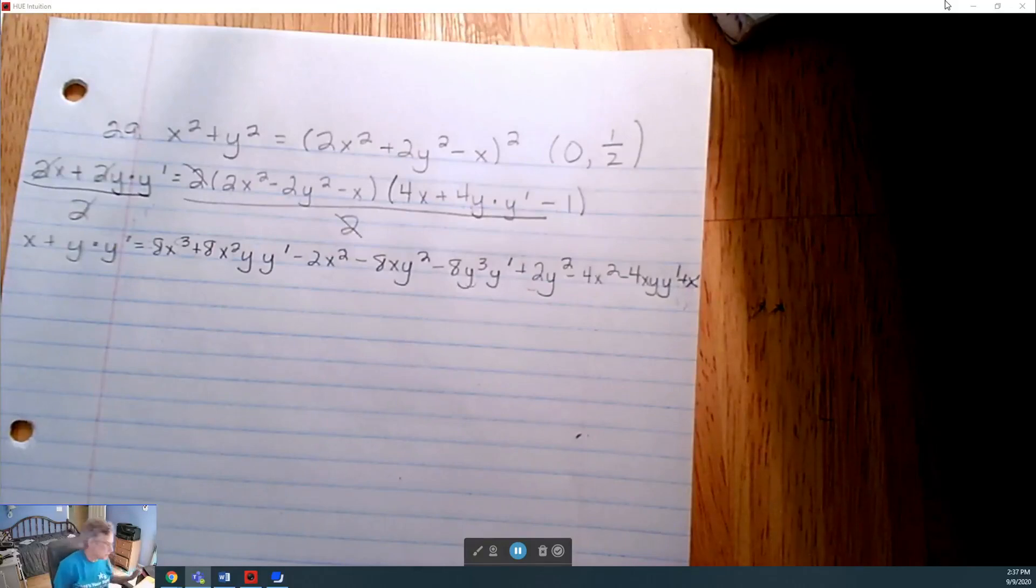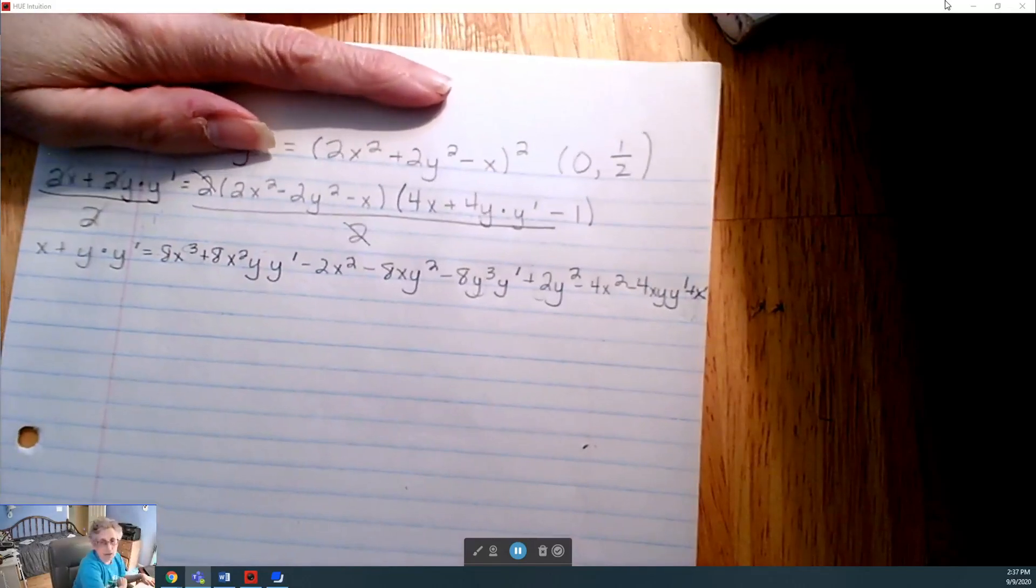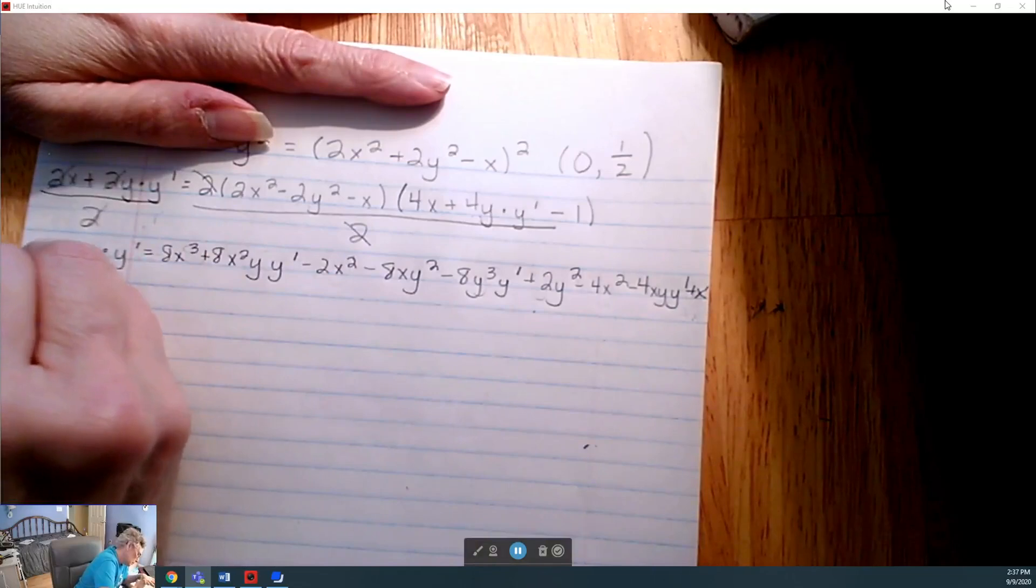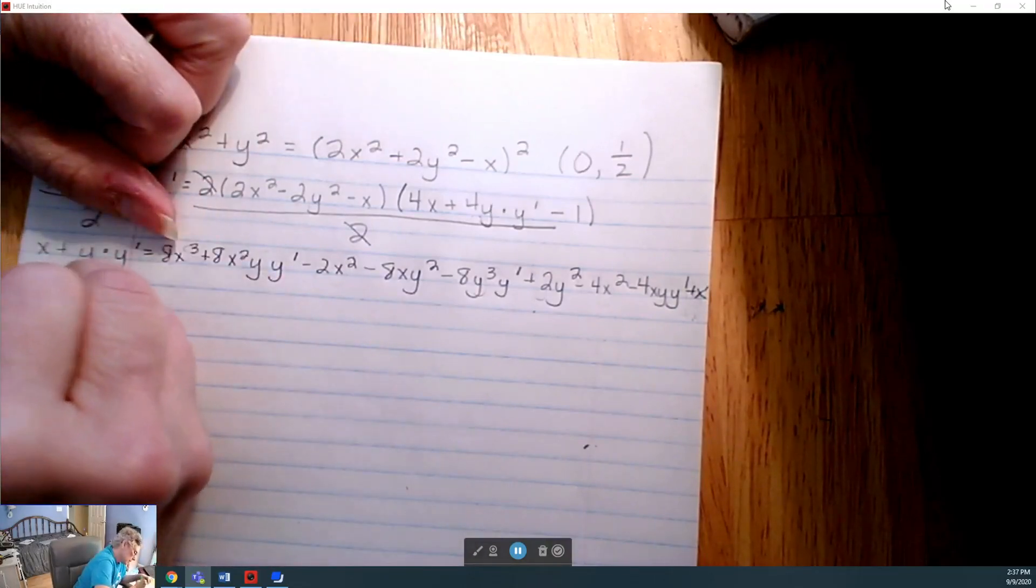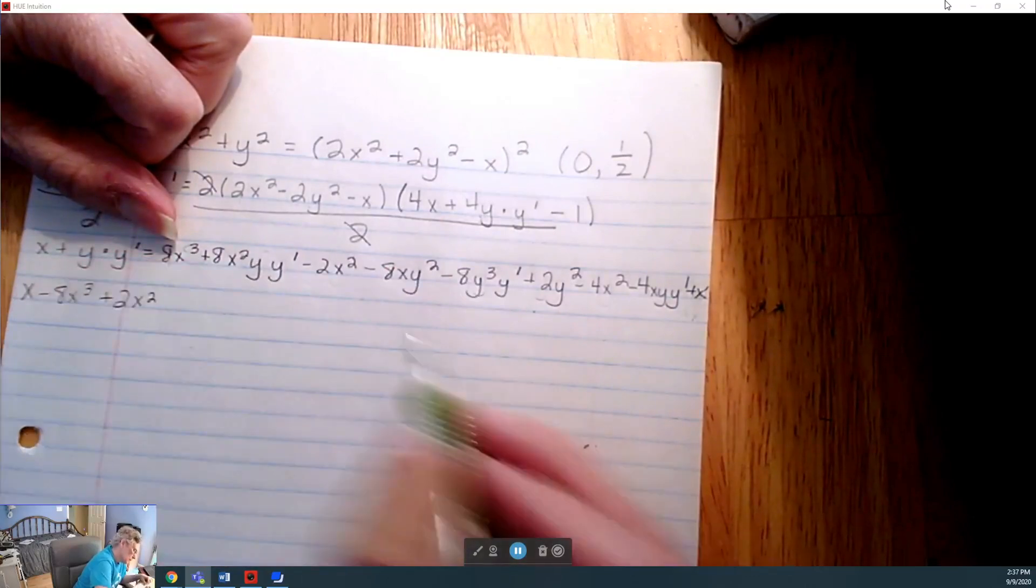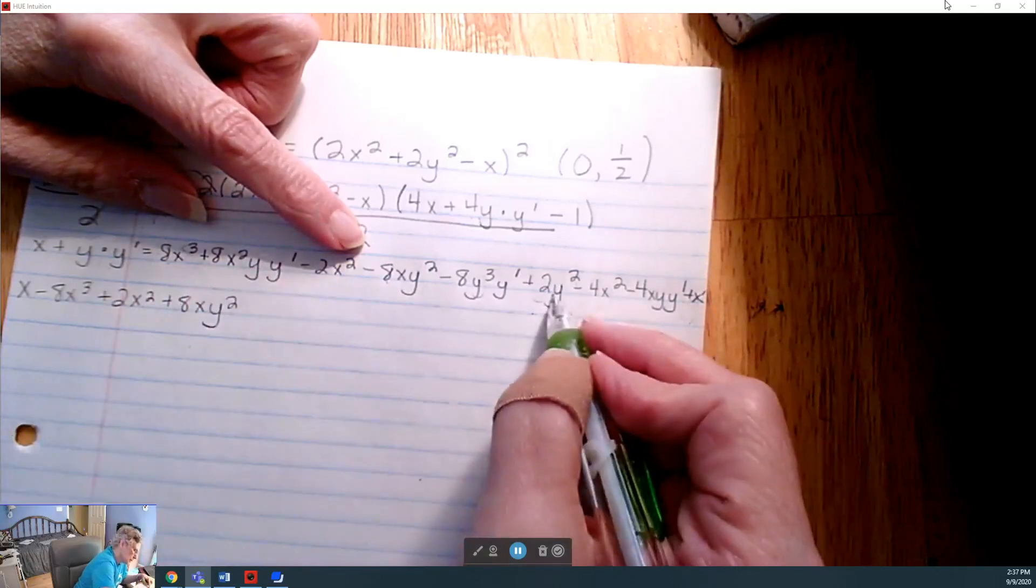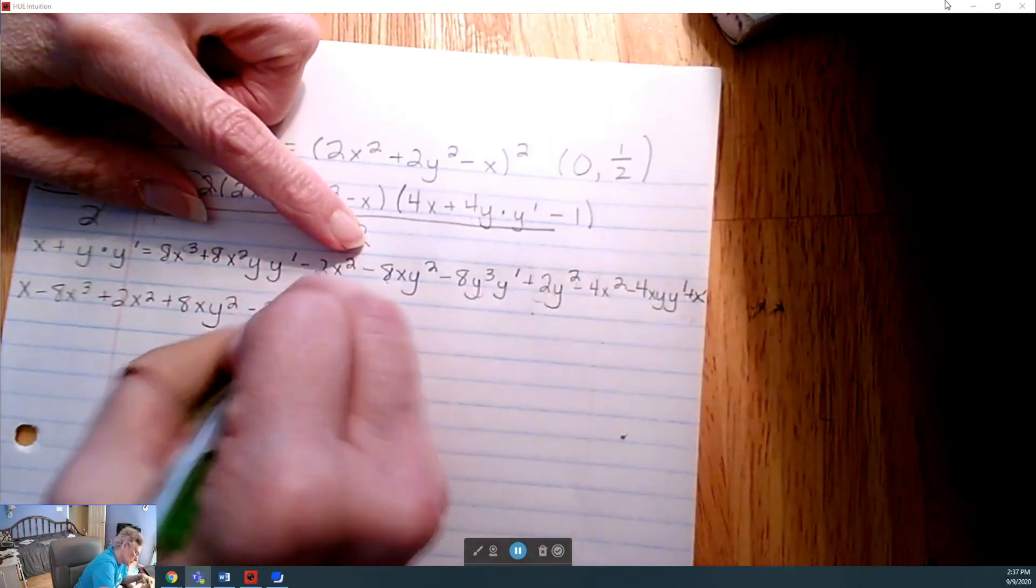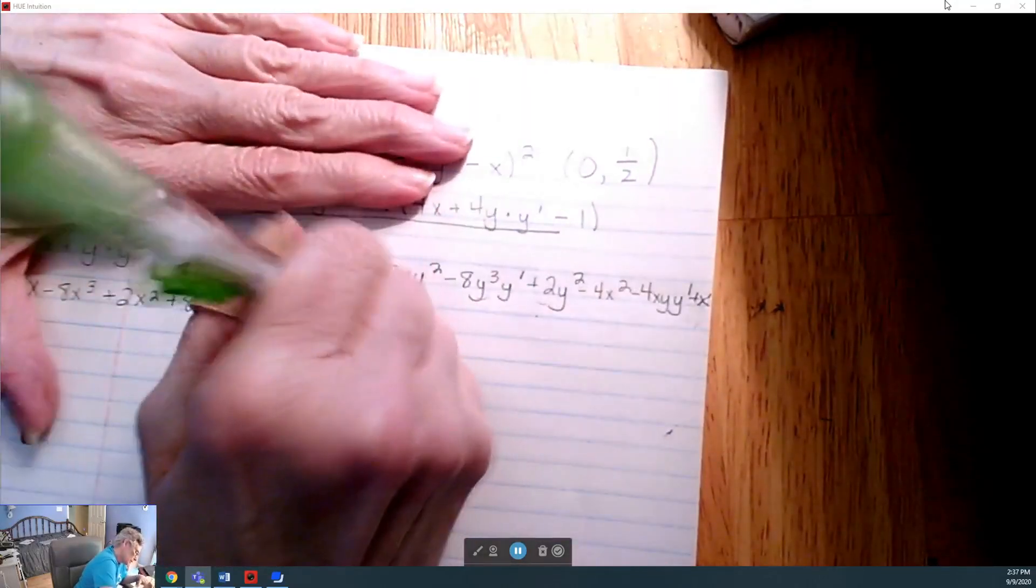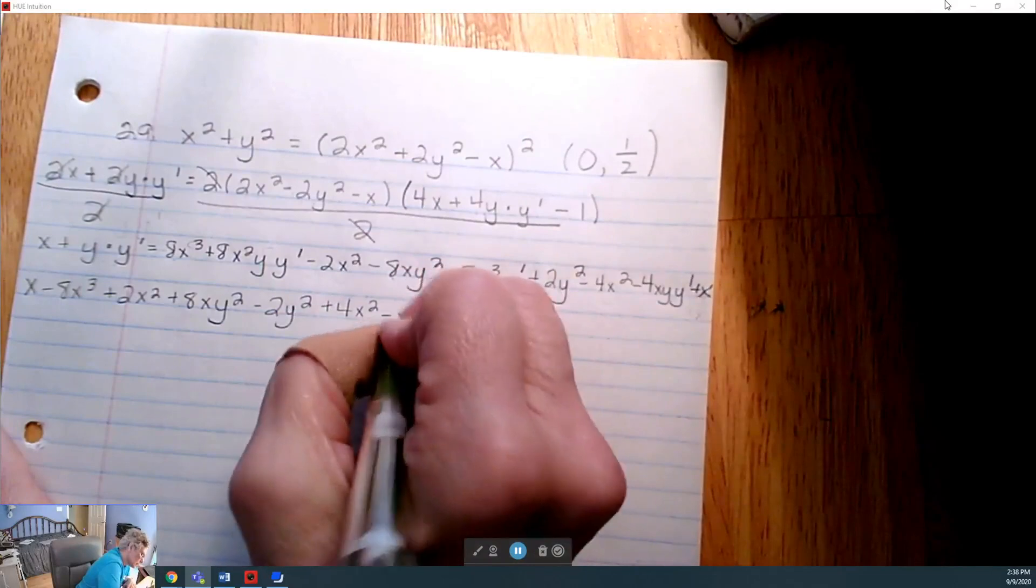Now you can fast forward through the places where I make mistakes. So let's get all our primed stuff on one side. All our doesn't have primed stuff on the other. So I'm going to bring this primed over here. So I'll subtract 8x cubed. I'll add 2x squared. I'll add 8xy squared. I'll subtract 2y squared. I'll add 4x squared. I started doing arithmetic in my head.